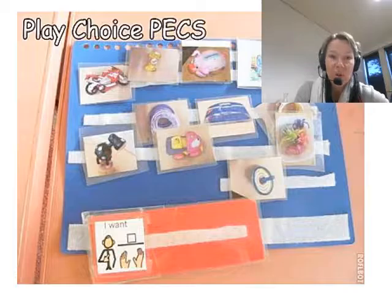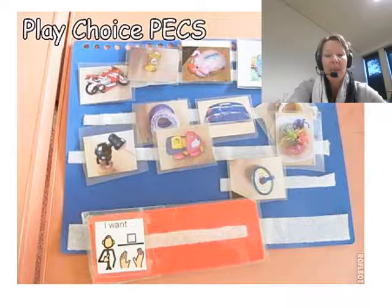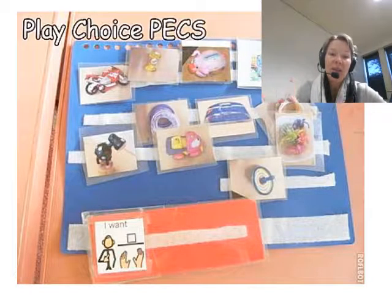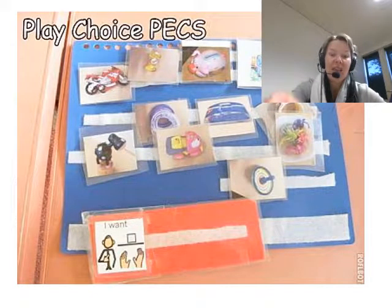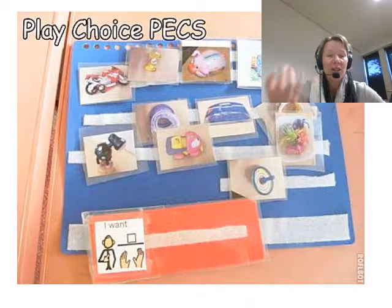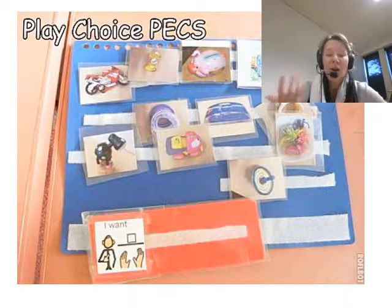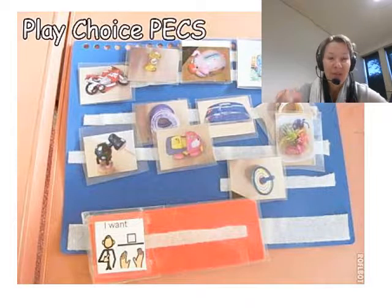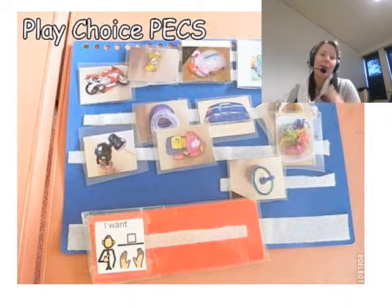A choice board gives the child a range of their preferred items to choose from. Even if all they really want is the iPad, you could have different app symbols so they can choose which one — it's still encouraging choice-making, and over time you can slowly introduce other options. Bubbles, chewing gum, or raw carrot for the crunchy sensory input can be great rewards for some young people, and there are all sorts of other sensory rewards to try to move them away from the iPad.